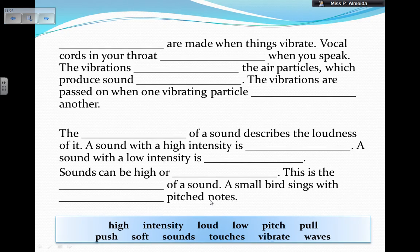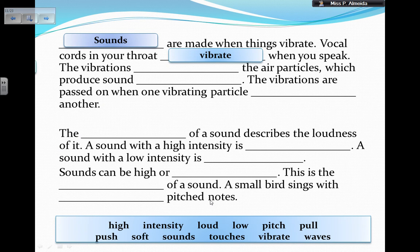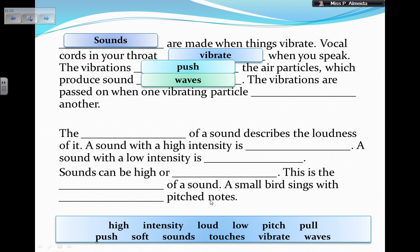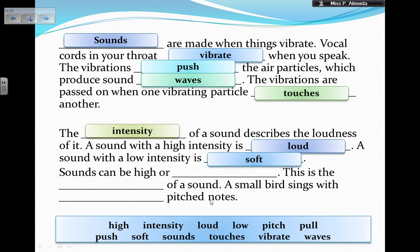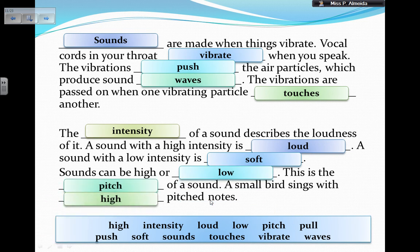I just have a summary exercise now. Pause the video if you want to try by yourself, which you should. Otherwise, here are the answers. Sounds are made when things vibrate. Vocal cords in your throat vibrate when you speak. The vibrations push the air particles, which produce sound waves. The vibrations are passed on when one vibrating particle touches another. The intensity of a sound describes the loudness of it. A sound with a high intensity is loud. A sound with a low intensity is soft. Sounds can be high or low. This is the pitch of a sound. A small bird sings with high pitched notes.